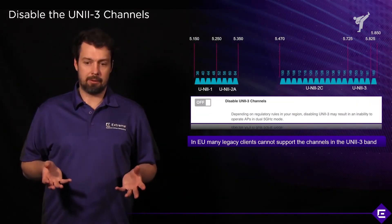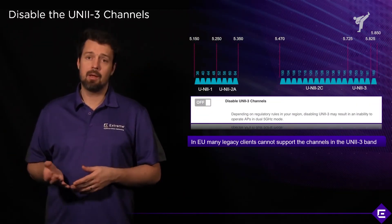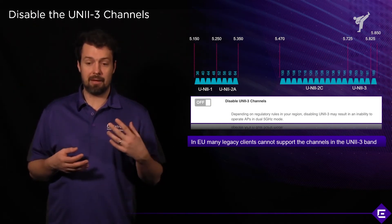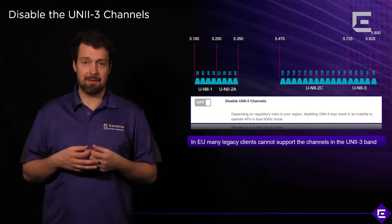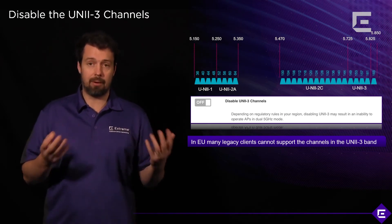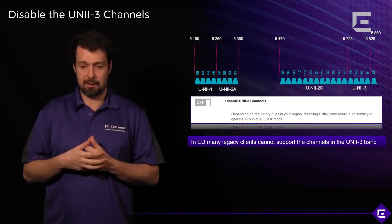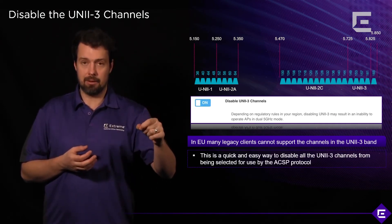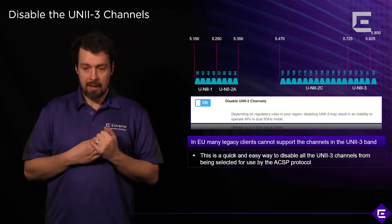Unless you have DFS enabled on 5GHz, in Europe you will only have four — or maybe eight depending on the country and whether they've implemented UNII-3 — non-overlapping 5GHz channels, because the DFS block will be blocked out. You need to enable DFS manually to open up those additional channels.